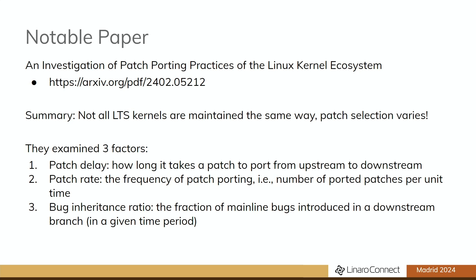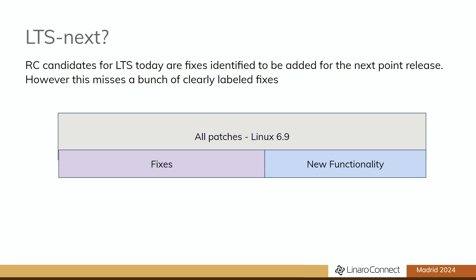This comes from a paper that really kicked off a lot of my own thinking — I'd like to see more papers in this space. The key finding is that not all LTS kernels are maintained the same way; they don't all have the same patch policies, which is probably not a good thing. They examined patch delay, patch rates, and bug inheritances. The link is in the slides — go read the paper. But it triggered one idea I want to plant in your minds: should we have an LTS-next? We have the concept of 'next' in mainline — patches that are interesting but not yet ready to be picked up — should we do the same for LTS?